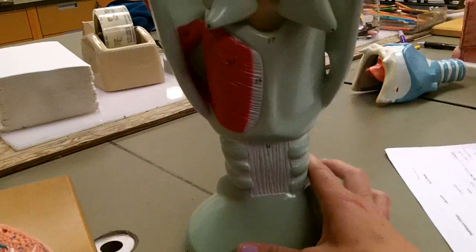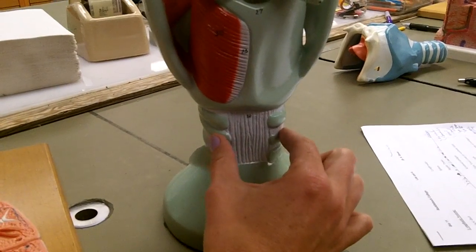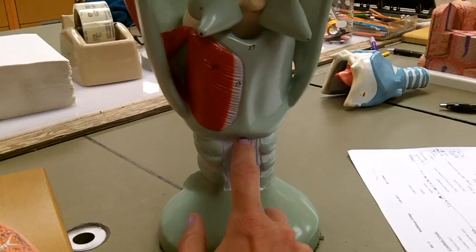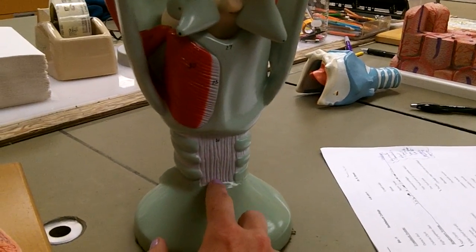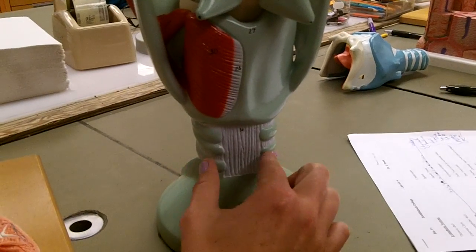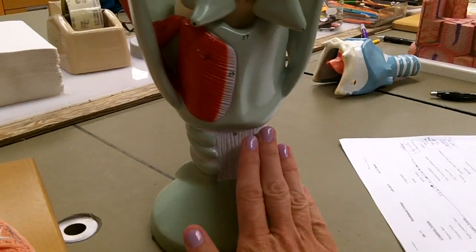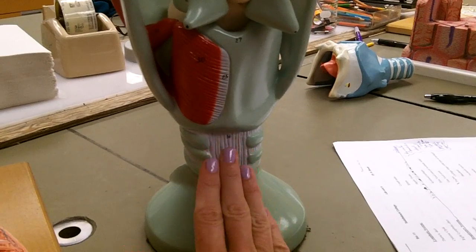On the back side we see the tracheal C-rings are not O-rings. They don't go all the way around, and this muscle is showing you that it's the trachealis. Now it's good that we don't have tracheal O-rings that go all the way around, because right behind this structure would be the esophagus.